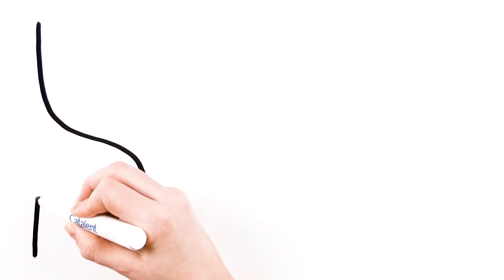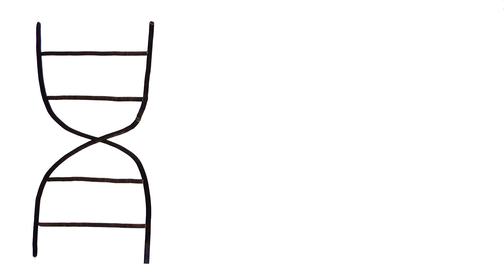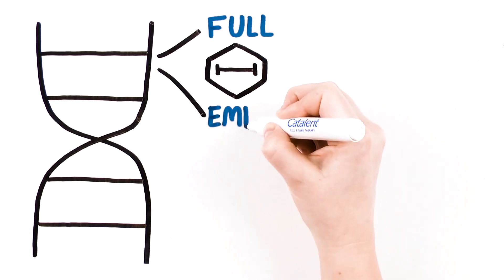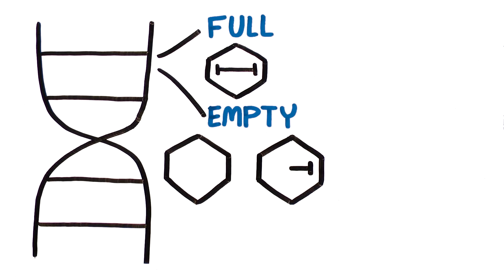Manufacturing can produce different populations of capsids: full, containing a complete copy of the DNA, or empty, containing no DNA or an incomplete copy.